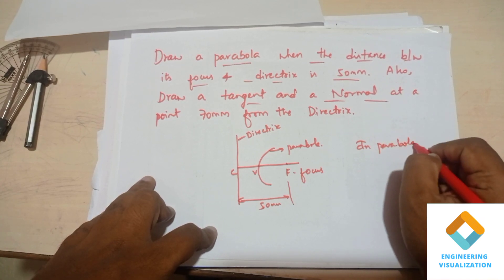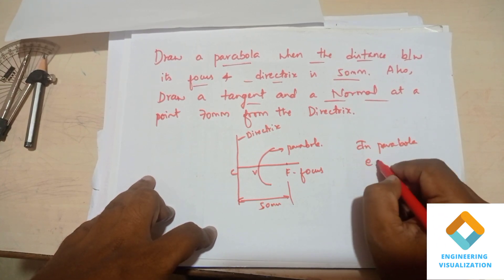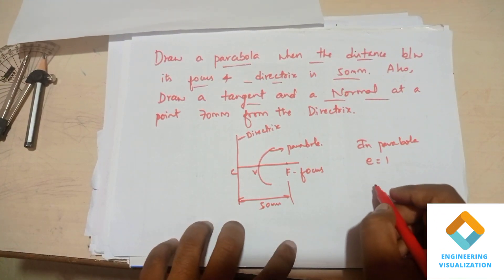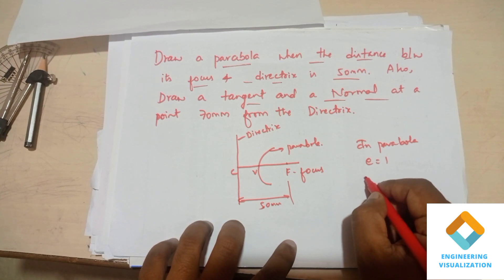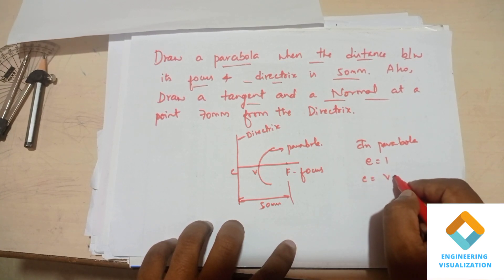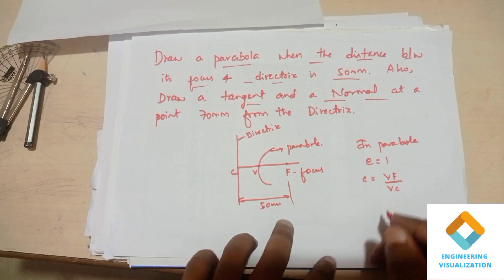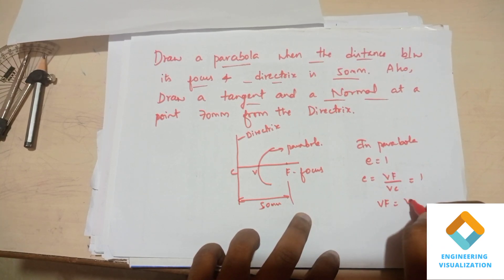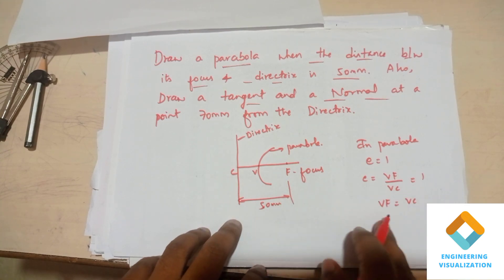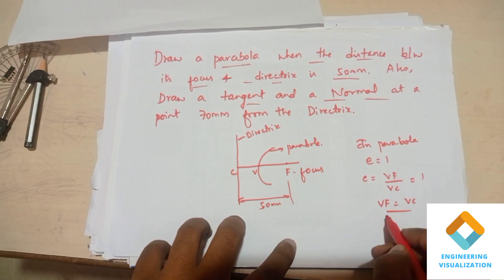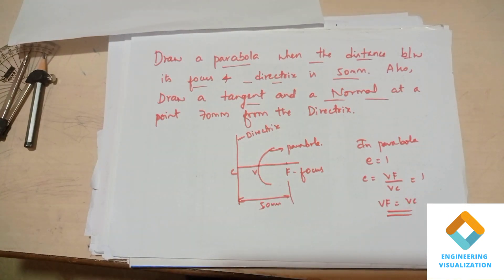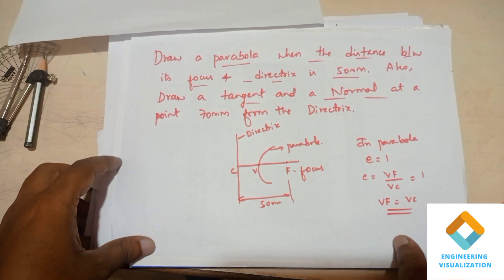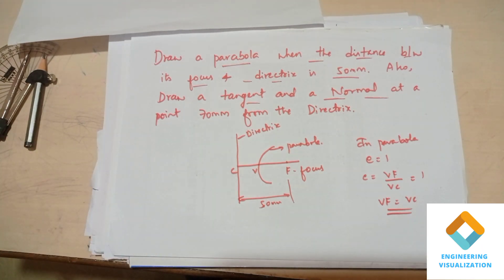In a parabola, eccentricity e is equal to 1. Eccentricity equal to 1 means VF divided by VC equals 1, so VF is exactly equal to VC. Both VF and VC will have the same length, that is 25mm each.